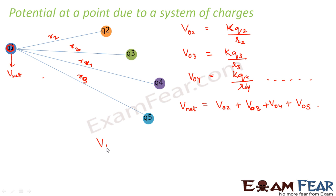So in short or in general we can say that net potential due to a system of charges is the summation of the potential due to individual charges, that is summation of KQi divided by Ri where i is anything from 1 to n.